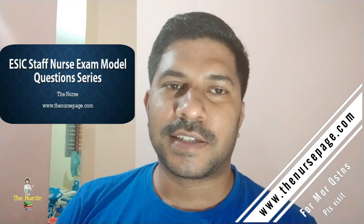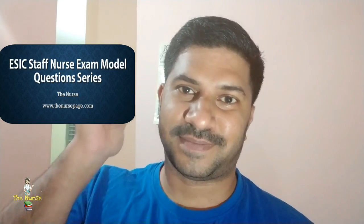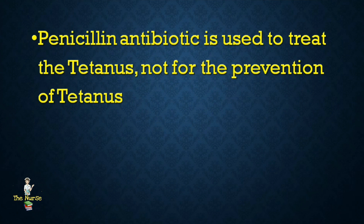Question 1: Which of the following is NOT a preventive measure for tetanus? Options: TT vaccination, follow five clean rule, TT immunization during reproductive age, penicillin antibiotic. Correct answer is penicillin antibiotic — penicillin antibiotic is used to treat tetanus, not for its prevention.